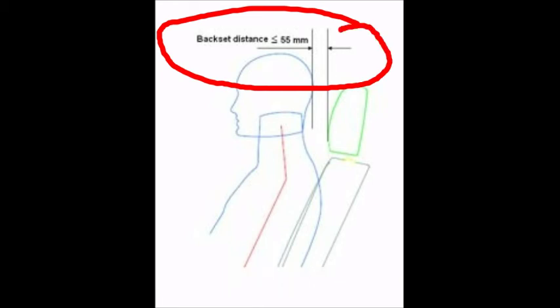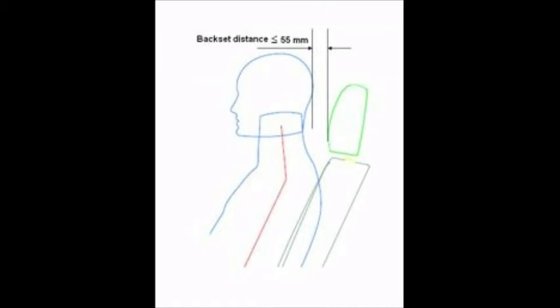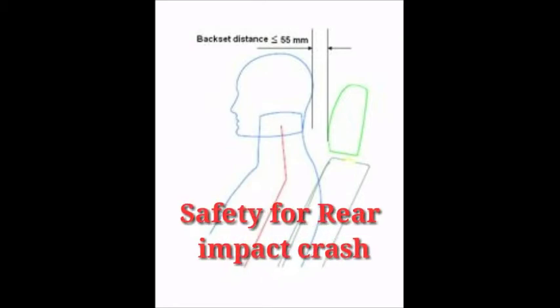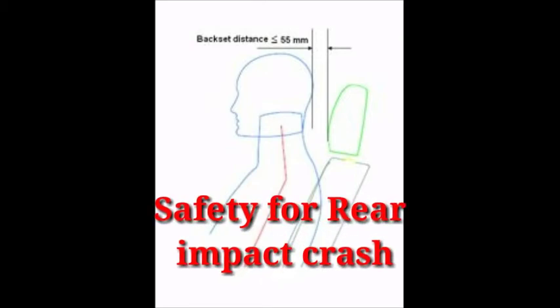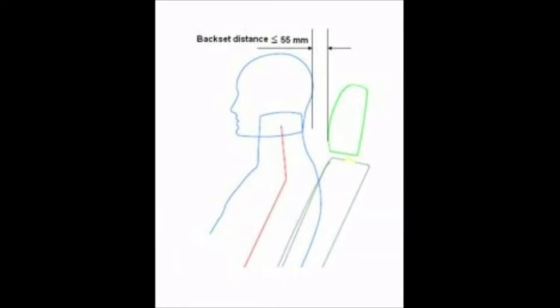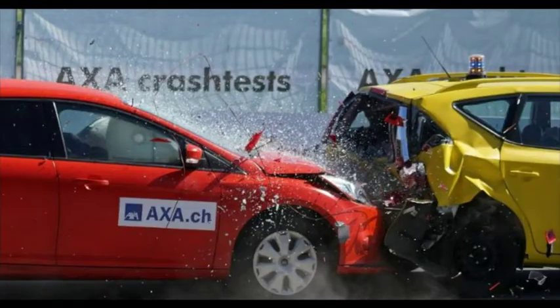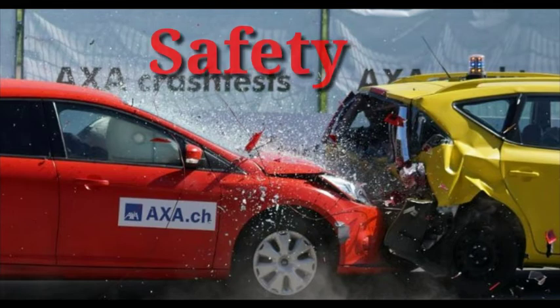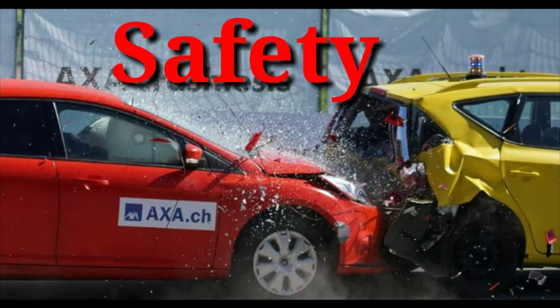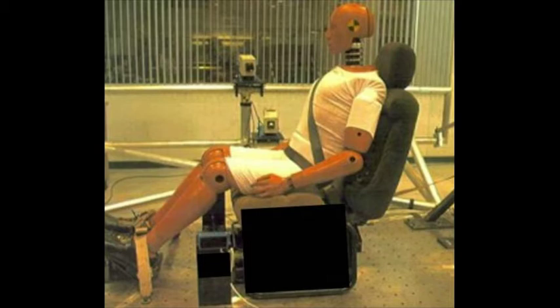FMVSS 202E requires that the distance between the back of the HRMD head and the headrest — a dimension termed 'backset' — should not be more than 55mm. The purpose of this backset requirement is to reduce the distance between the occupant's head and the headrest. Simulation shows that decreasing this length reduces whiplash associated disorders in rear impact crashes, making the occupant more safe.